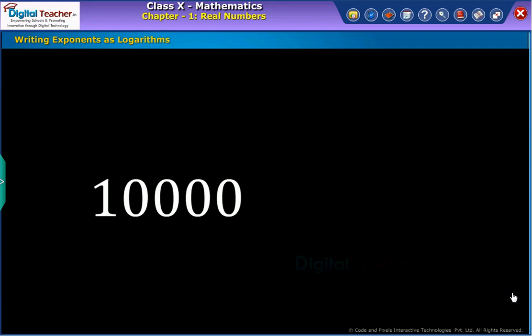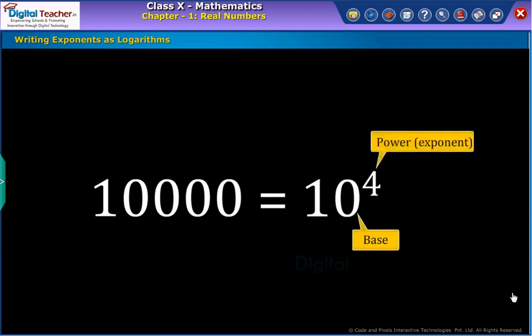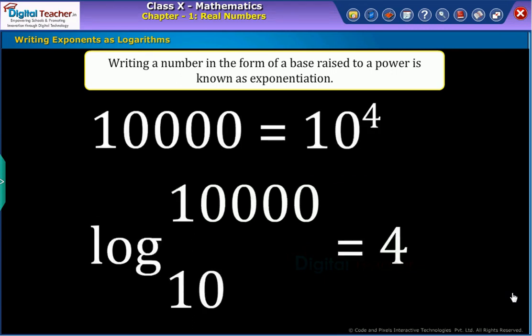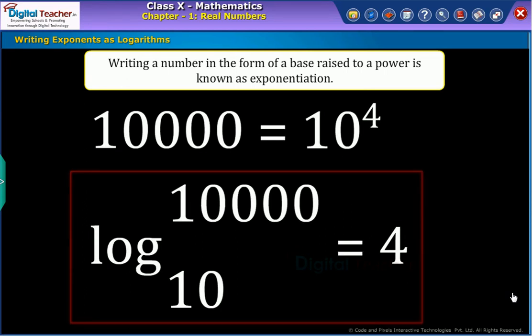For example, 10,000 can be written as 10 power 4, where 10 is the base and 4 is the exponent. So, writing a number in the form of a base raised to a power is known as exponentiation. We can also write it in another way called logarithms as log base 10 of 10,000 equals 4.